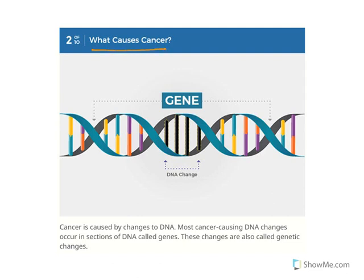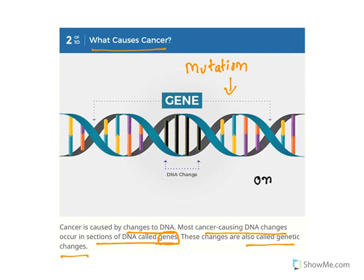What causes cancer? Mutation — a change in genes. Cancer is caused by changes to DNA. Most cancer-causing DNA changes occur in sections of DNA called genes, which are the functional unit. These changes are also called genetic changes. We have two kinds of genes: oncogenes, which are highly activated and responsible for causing cancer, and tumor suppressor genes, which are inhibited. These two mutations are what cause cancer.